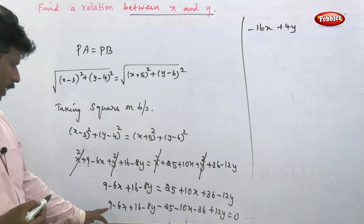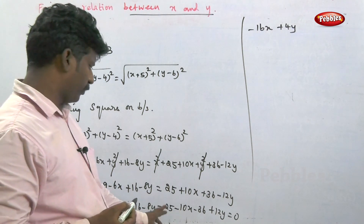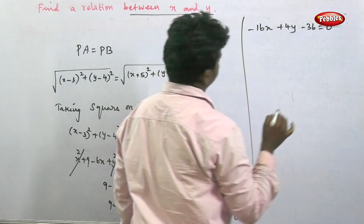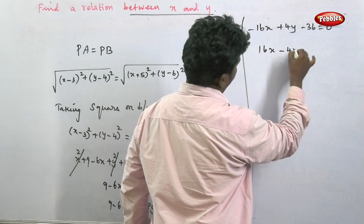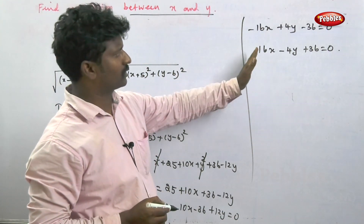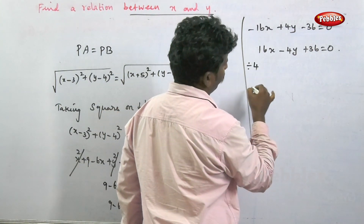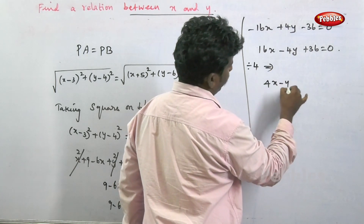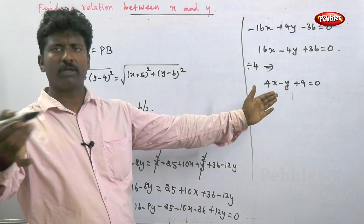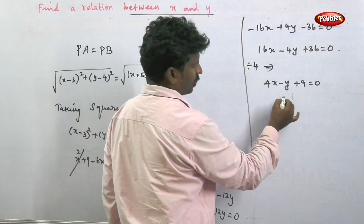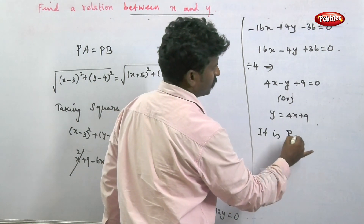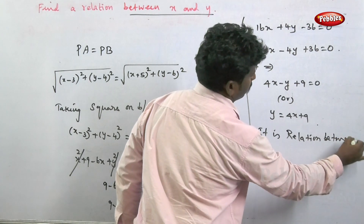Rearranging all terms to one side: minus 6x minus 10x gives minus 16x; minus 8y plus 12y gives plus 4y; constants 9 plus 16 minus 25 minus 36 gives minus 36. So minus 16x plus 4y minus 36 equals 0. Dividing by minus 4: 4x minus y plus 9 equals 0. This is the relation between x and y. Writing as y equals 4x plus 9.